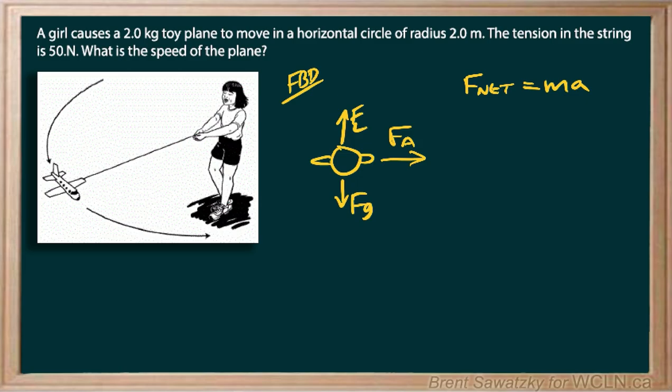Now, where we can go with this is we can say that if we're looking only horizontally, then we could say that the only force acting is FA. And then we have the mass of the plane, and then we have the acceleration. Now, it's not accelerating up or down, it's accelerating because it's being pulled in a curve. So we have centripetal acceleration happening in this situation. So the applied force is causing this centripetal acceleration, or the constant turning of this plane.